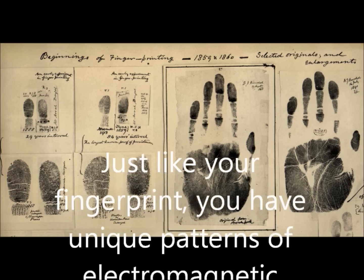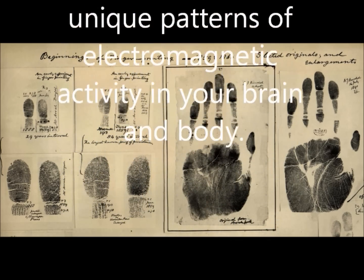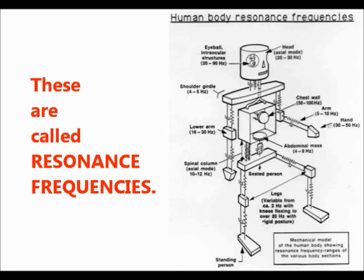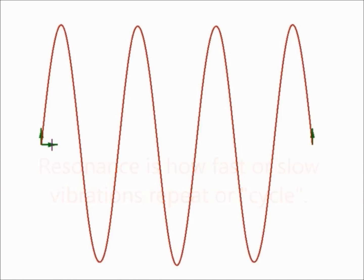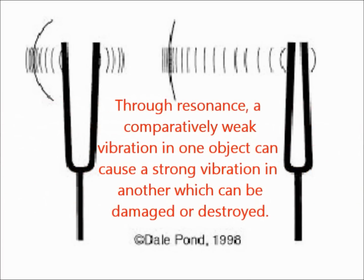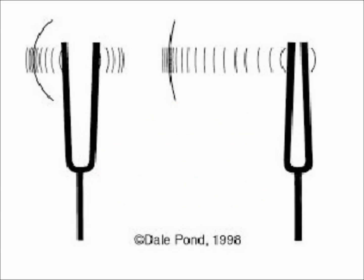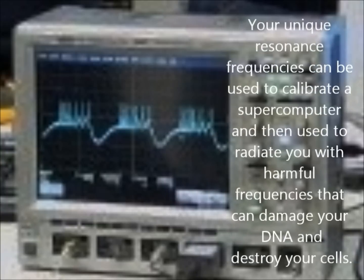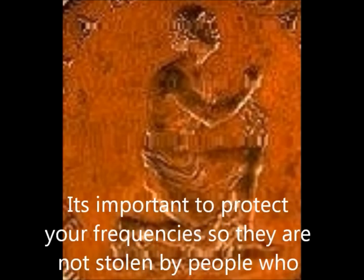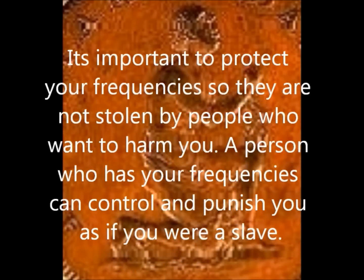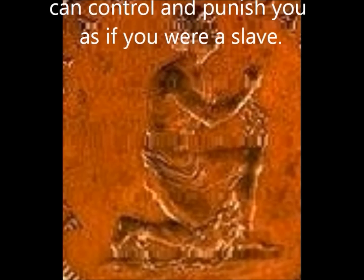Just like your fingerprint, you have unique patterns of electromagnetic activity in your brain and body. Resonance is how fast or slow vibrations repeat or cycle. Through resonance, a comparatively weak vibration in one object can cause a strong vibration in another, which can be damaged or destroyed. Your unique resonance frequencies can be used to calibrate a supercomputer and then used to radiate you with harmful frequencies that can damage your DNA and destroy your cells. It's important to protect your frequencies so they're not stolen by people who want to harm you — a person who has your frequencies can control and punish you as if you were a slave.